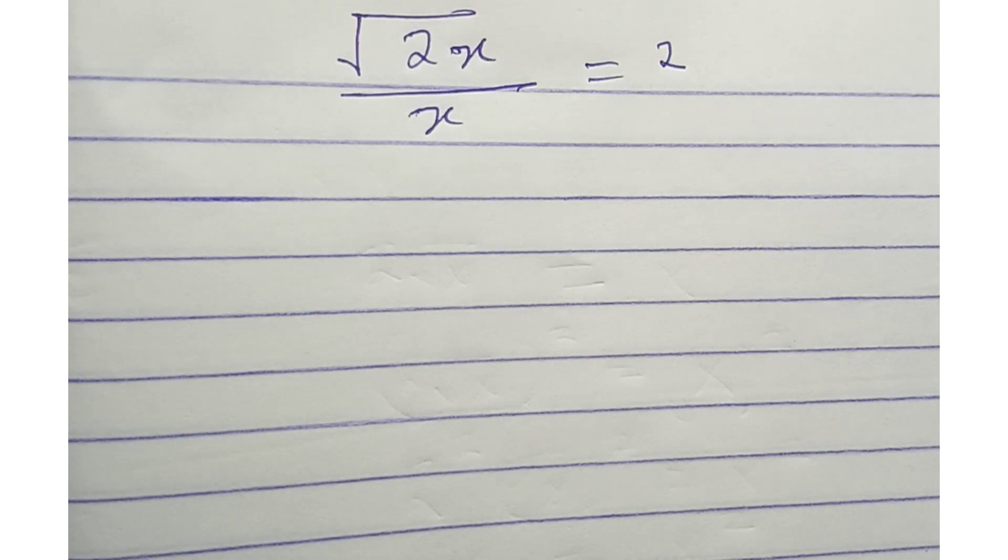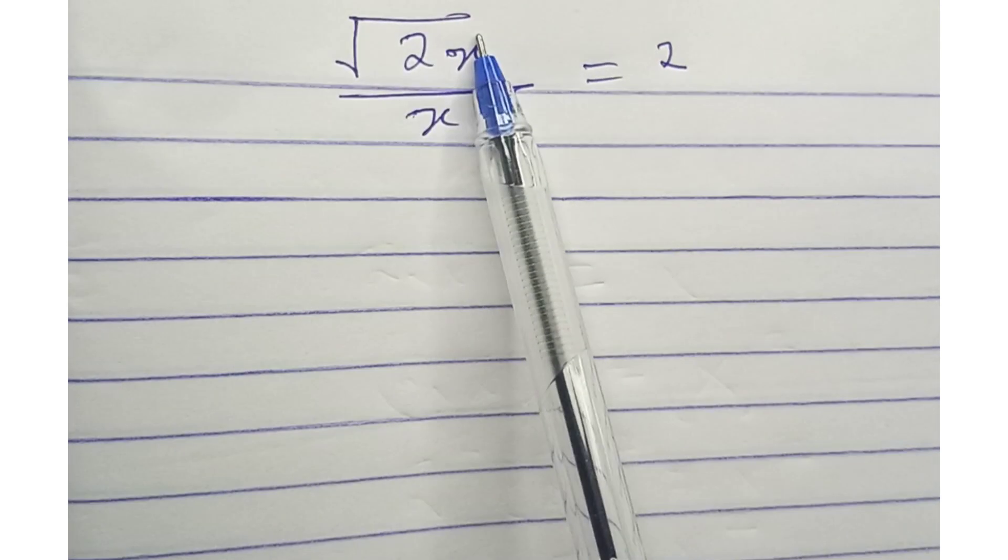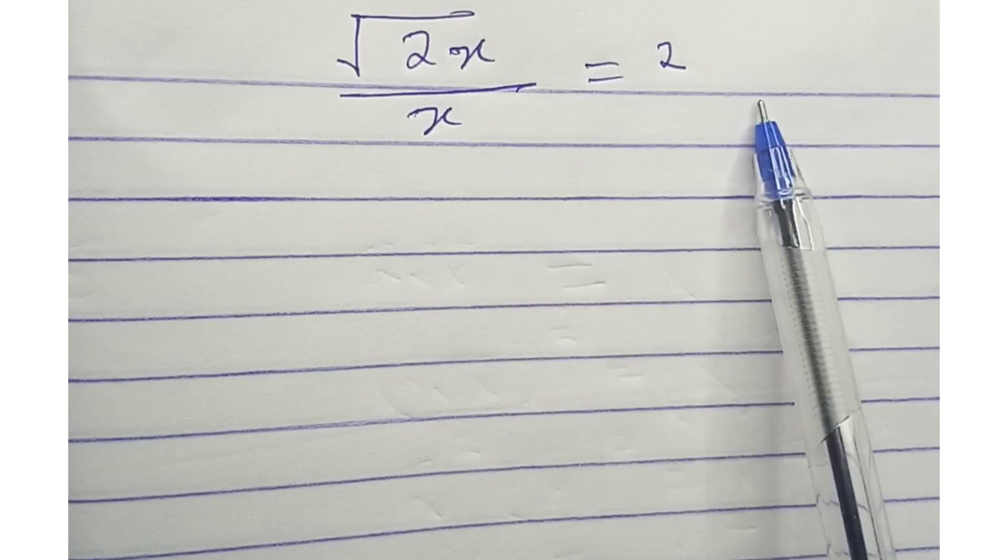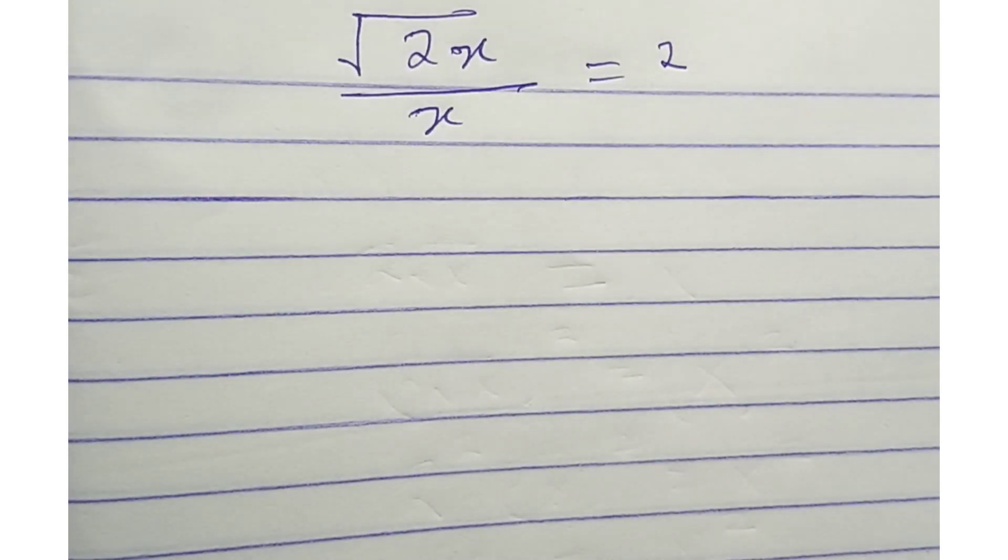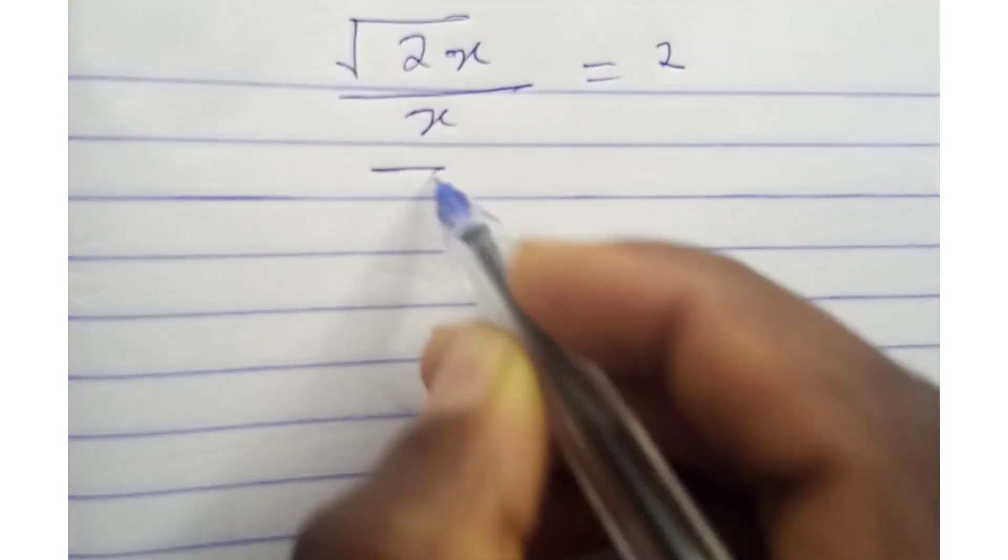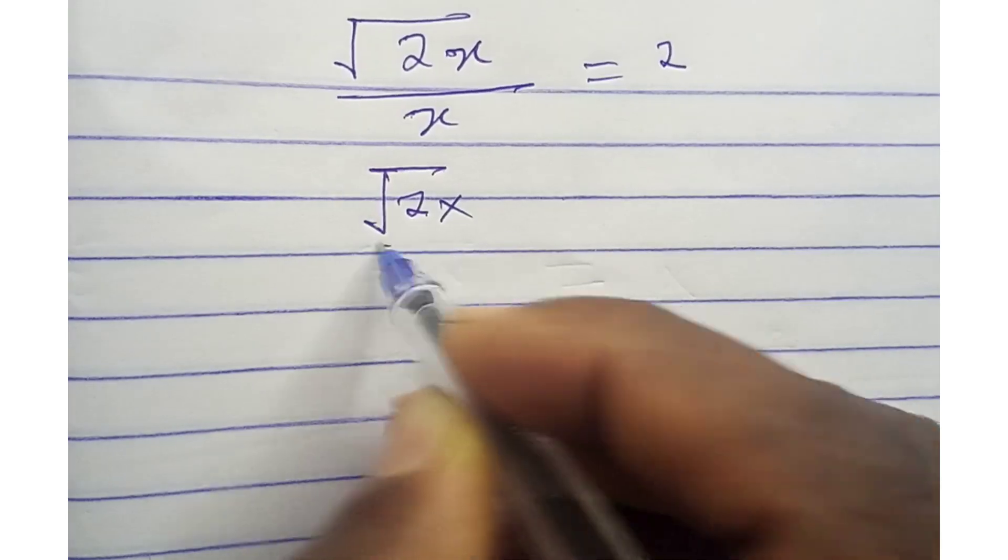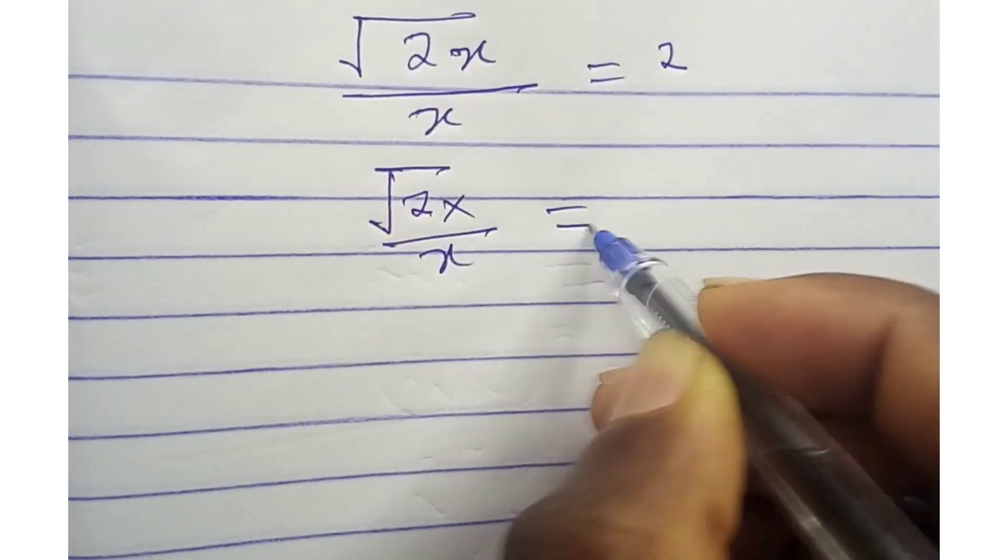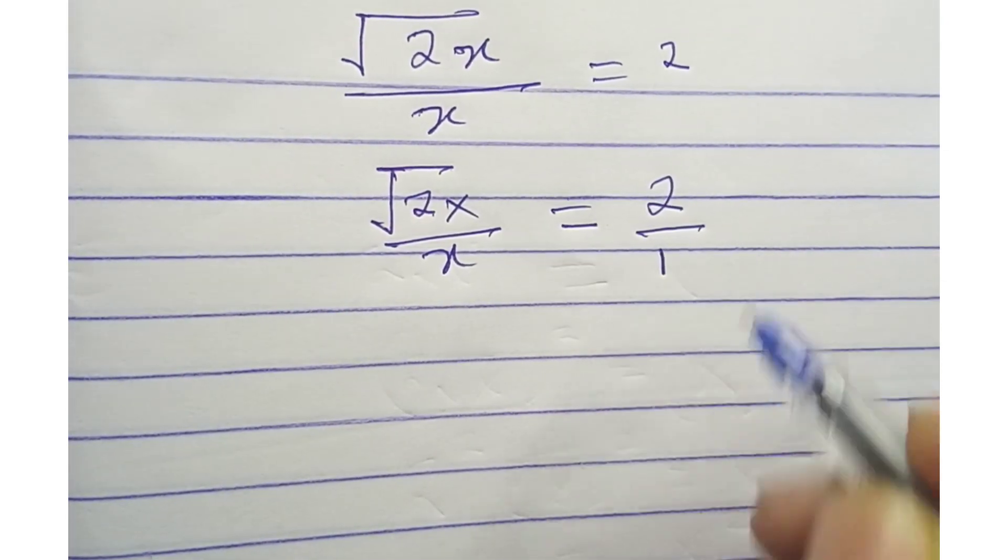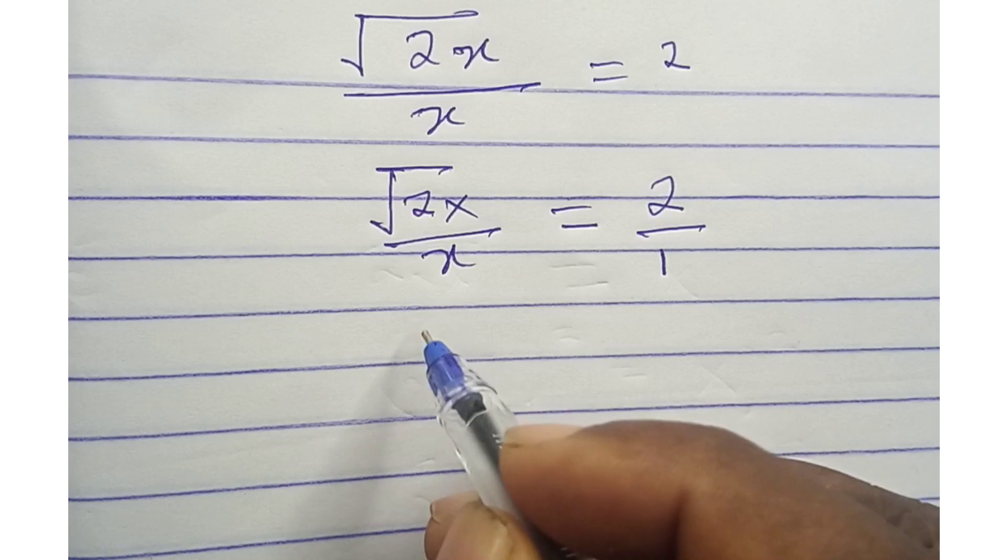Hello friends, let's solve this: root x root 2x divided by x equals 2. So to solve this, we can have root 2x over x divided by 2. We divide by 1, cross multiply.